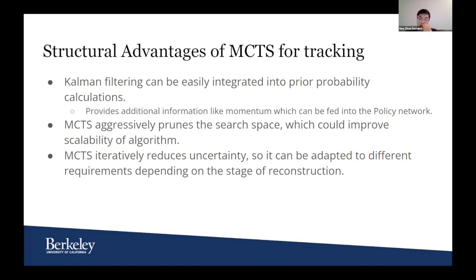There are some specific advantages for tracking. Kalman filtering can be easily integrated in that MCTS requires evaluating prior probabilities on each edge of the decision tree, which is similar to the CKF where we evaluate iterative chi-squared for each propagating edge. Also, the MCTS aggressively prunes the search space, focusing only on what it considers promising avenues, which should bring about scalability. And since MCTS iteratively reduces uncertainty, it can be adapted to different requirements depending on the stage of reconstruction, whether offline or online.